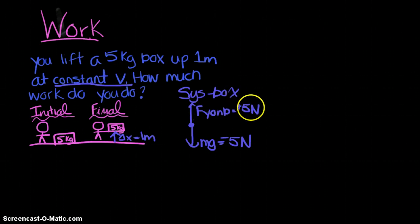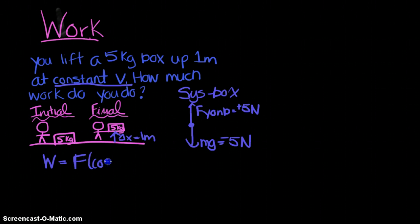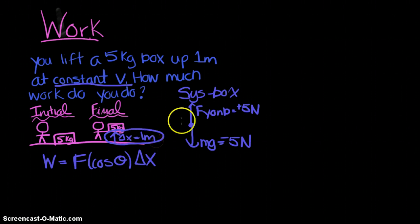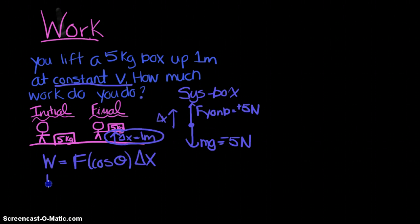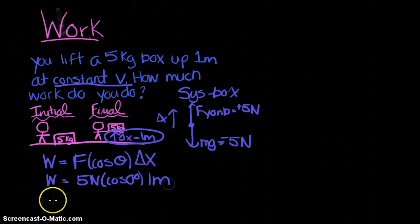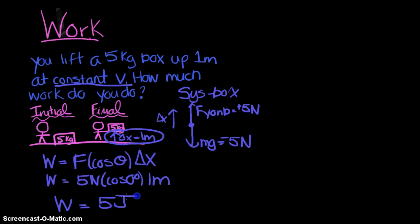Since the force of you on the box is 50 Newtons upward and the displacement is 1 meter upward, the angle between them is 0 degrees. So work = 50 Newtons × cos(0°) × 1 meter = 50 joules.